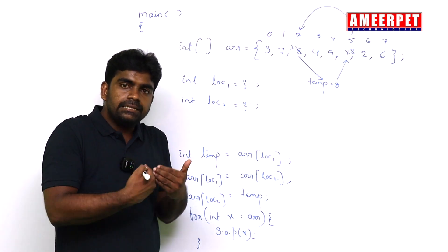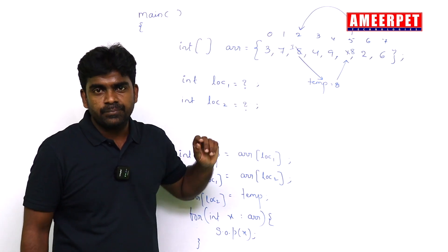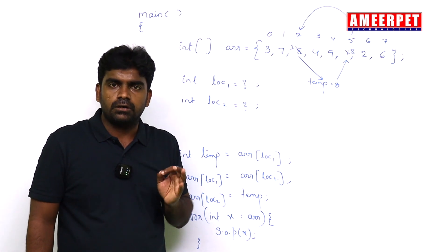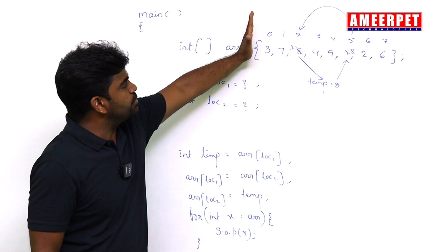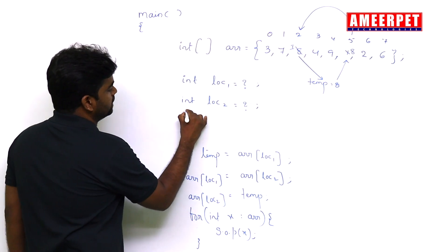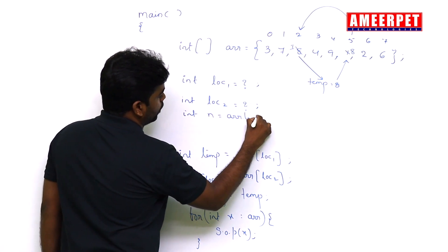Then when you read the locations, scan.nextint and scan.nextint, checking the locations are valid locations or not. How? The locations must be from 0 to length minus 1 only. I'm taking that length integer n equal to ARR dot length.